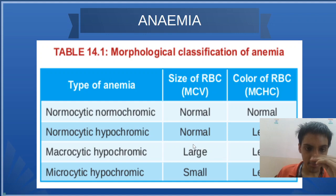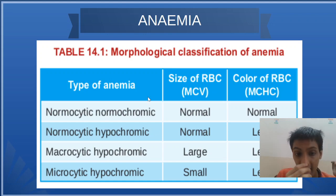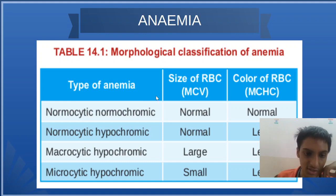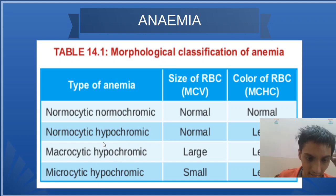Now let us see the morphological classification of anemia. First is normocytic normochromic — remember, 'chromic' means color, 'normo' means normal, and 'cytic' means cell — so the size and color are normal. Then normocytic hypochromic, which has two subtypes: normochromic and hypochromic. Hypochromic also includes macrocytic and microcytic types.